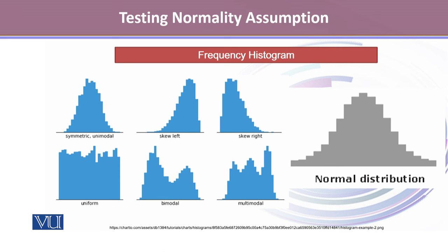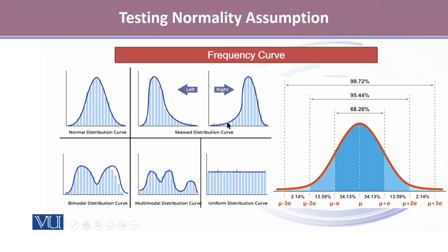One thing is very important to note here: all these descriptive statistics measures talk about what the sample tells us. Descriptive statistics methods are strong enough to give us a strong hint about the normality assumption being true. But sometimes, descriptive methods contradict what inferential methods indicate. So the very first step is drawing a histogram, and if the histogram is symmetrical, we have a strong hint that the normality assumption might be true.